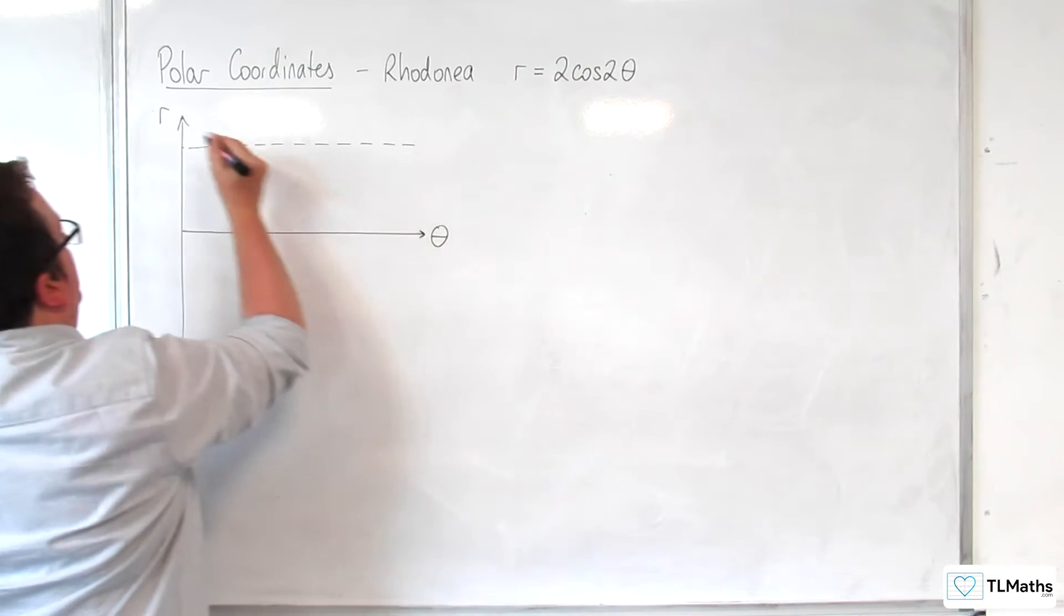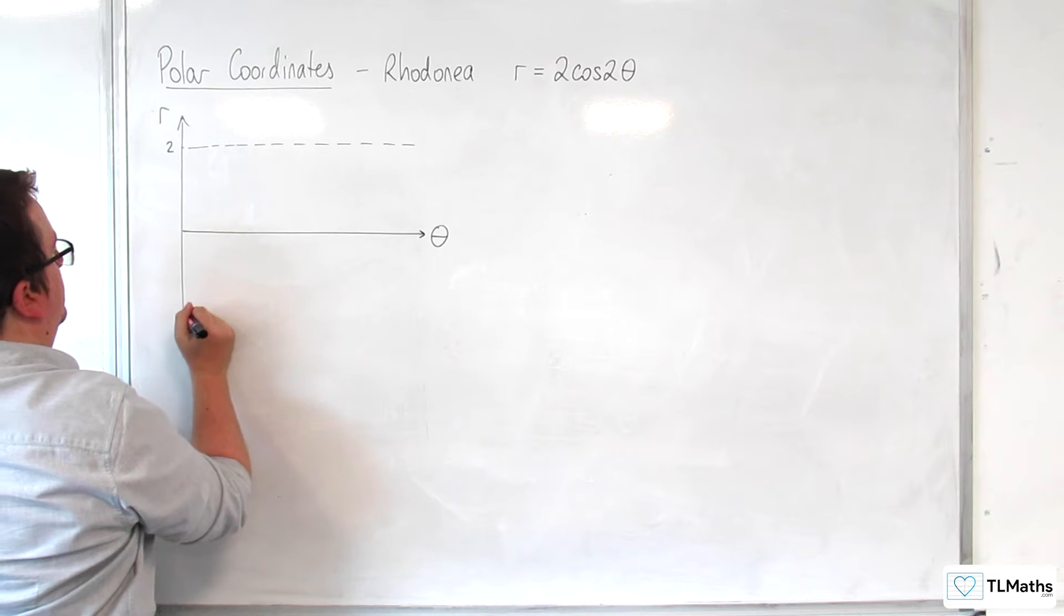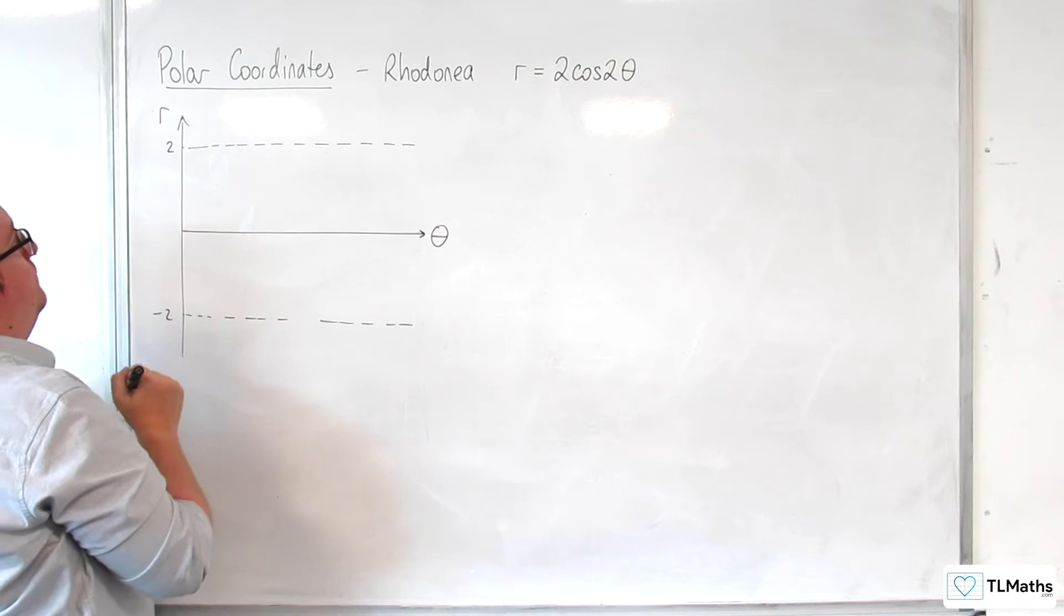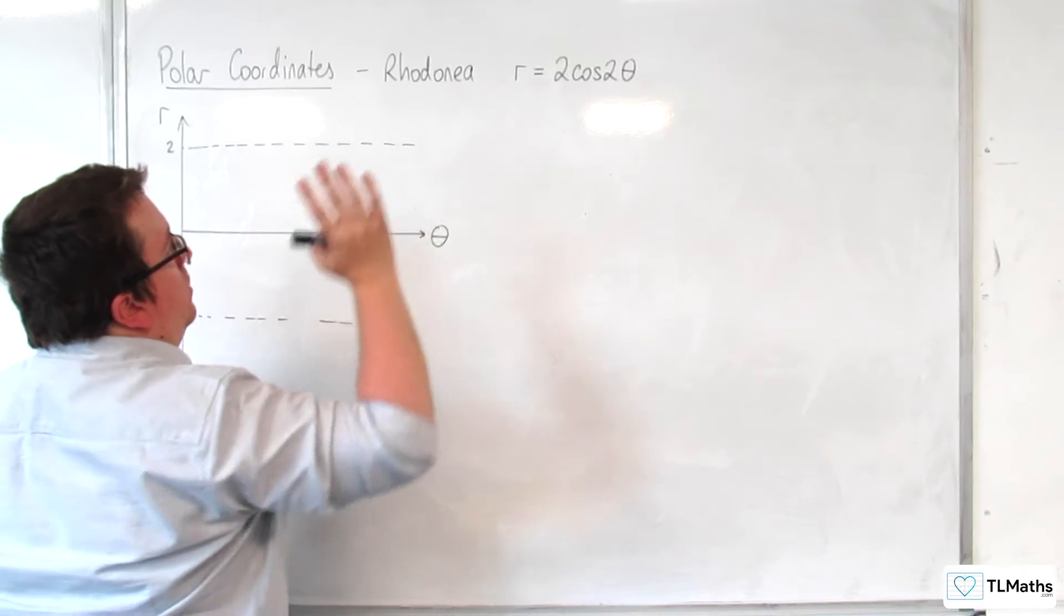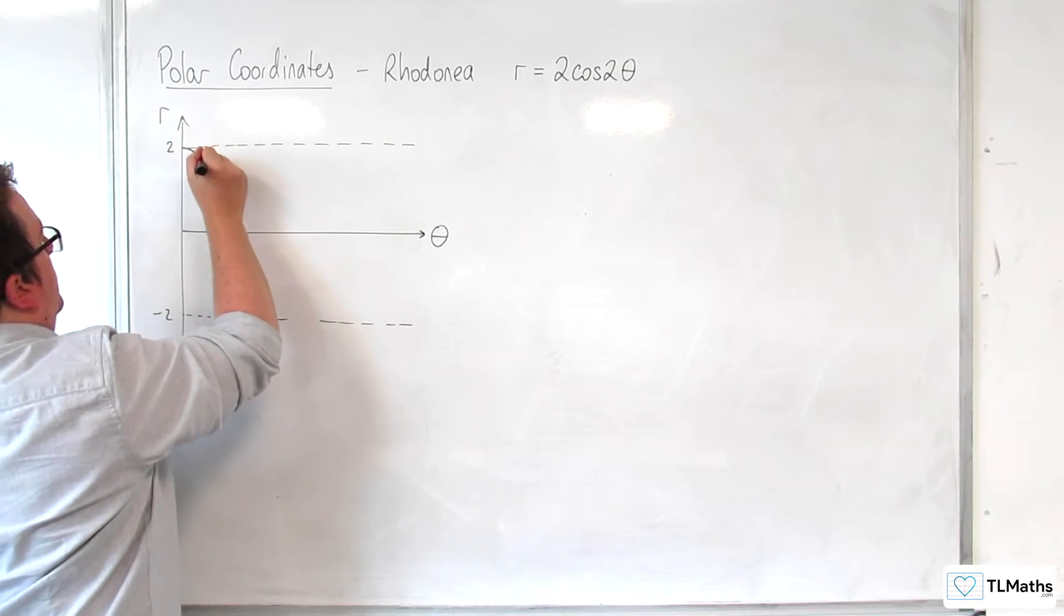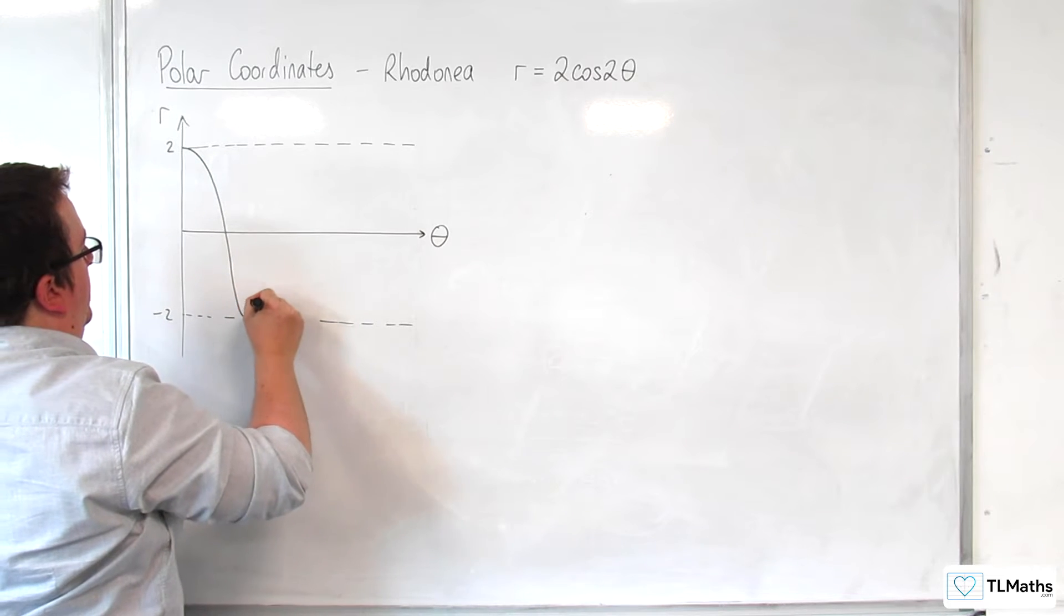When theta is 0, we're going to be at 2, so we start off here. We're going to have something that looks like this.